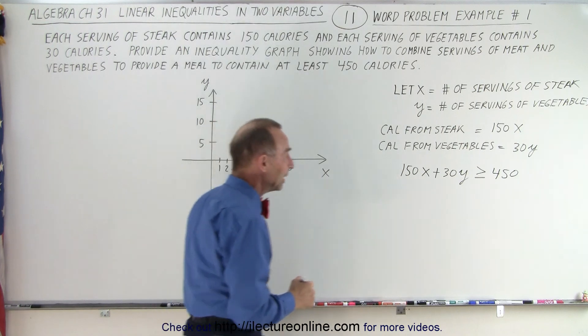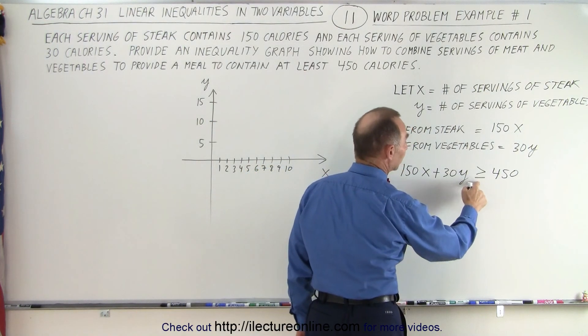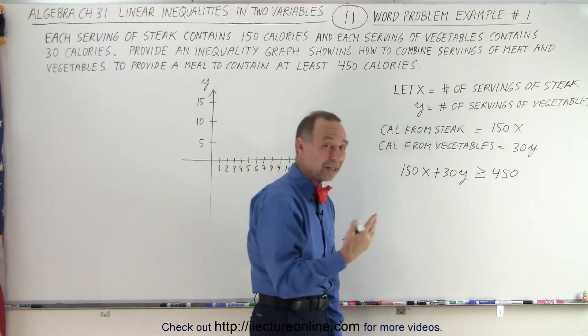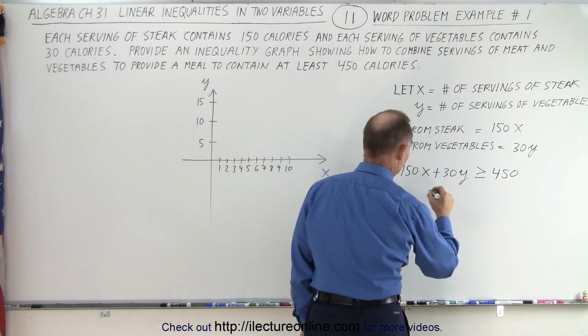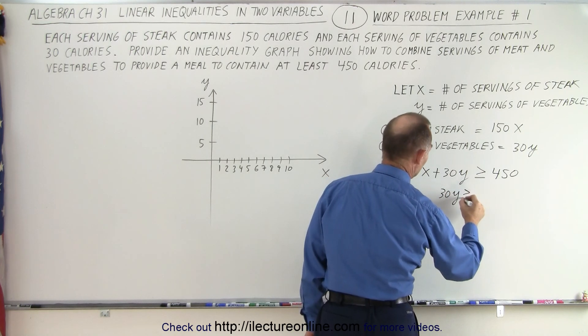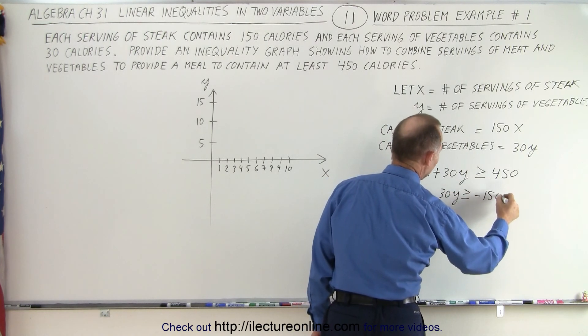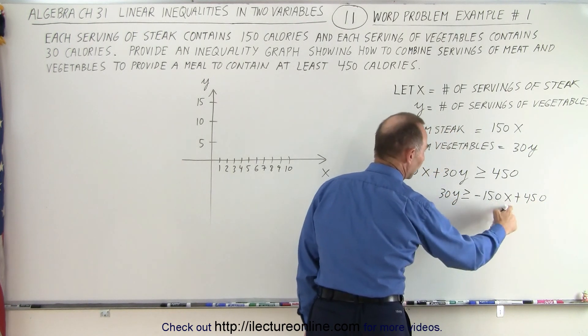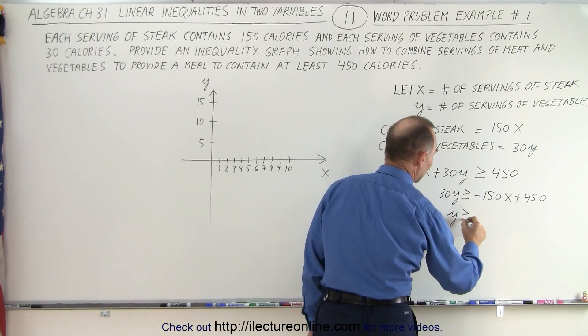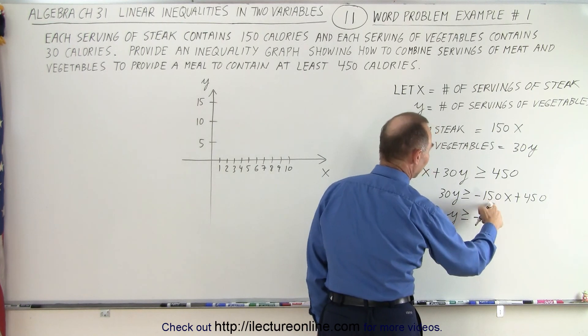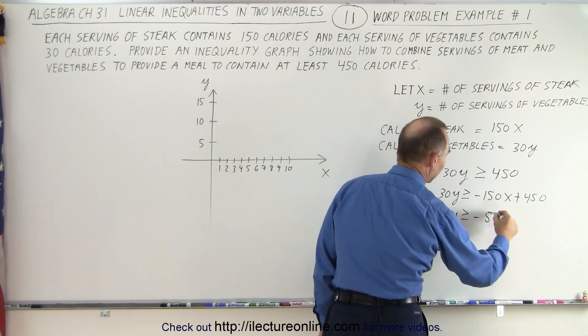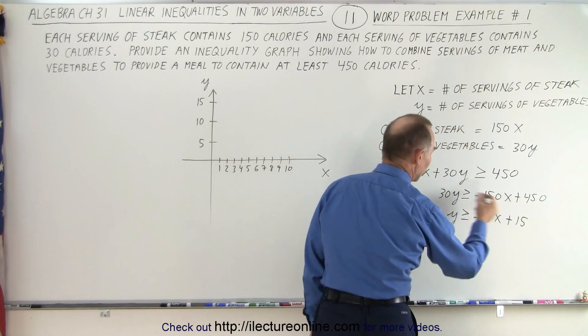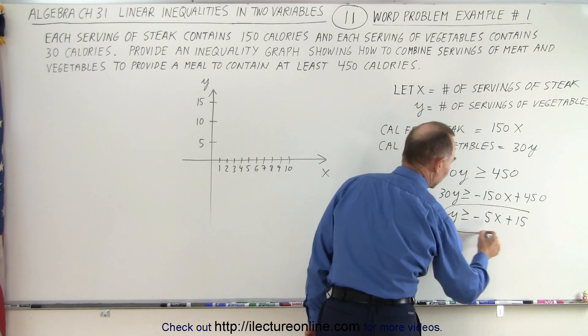The first thing we want to do is turn that into an equal sign. You may also want to put it in the format y equals mx plus b. We get 30y greater than or equal to minus 150x plus 450. If we divide both sides by 30, we get y greater than or equal to minus 5x plus 15. Now we have it in a format that makes it easier to graph.